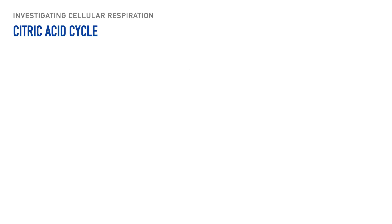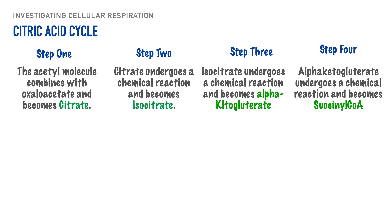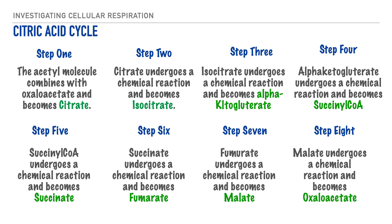Let's review the names of the substrates formed throughout the citric acid cycle. For the first four steps, we have the formation of citrate, followed by its transformation into isocitrate, alpha-ketoglutarate, and then succinyl coenzyme A. For the remaining steps, we transition into succinate, followed by fumarate, malate, and finally oxaloacetate.